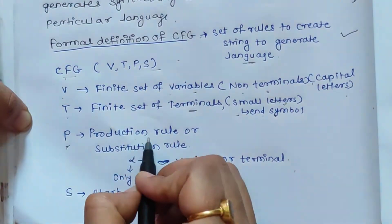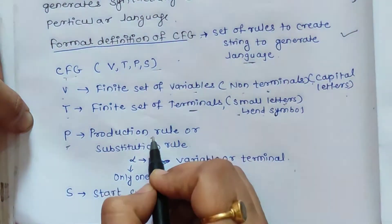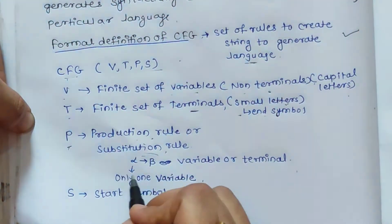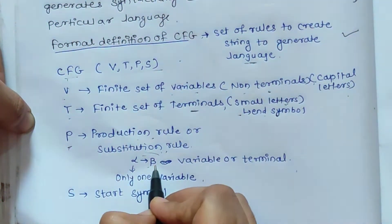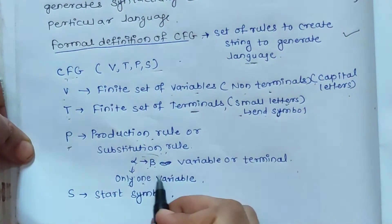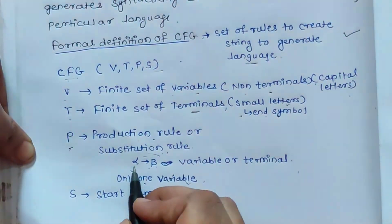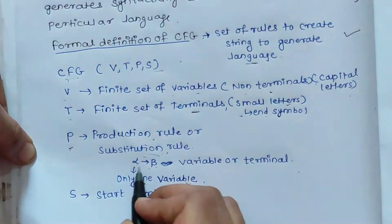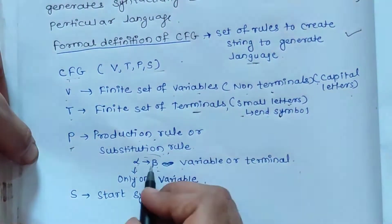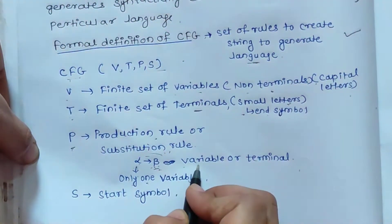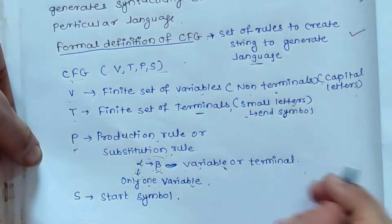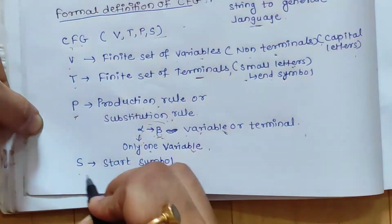Next is P. P is a set of rules — also called grammar rules, production rules, or substitution rules. The format of P is alpha tends to beta, where alpha is only one variable at the LHS. At the RHS there can be one or more variables, and it can be a combination of terminals, non-terminals, or both. S stands for start symbol.